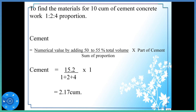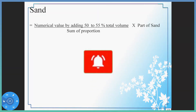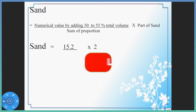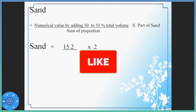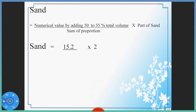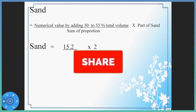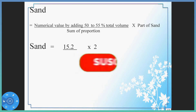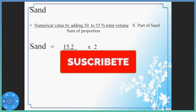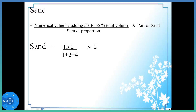Similarly, calculate the quantity for sand. We have to calculate the quantity for sand using the same formula — just change cement to sand, putting the part of sand. Numerical value adding 50 to 55 percent of total volume.